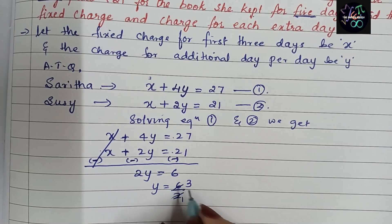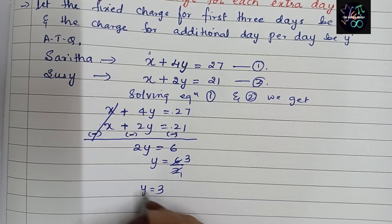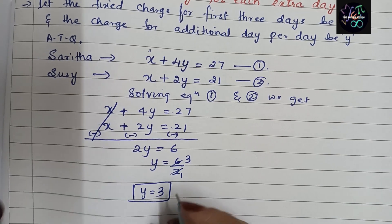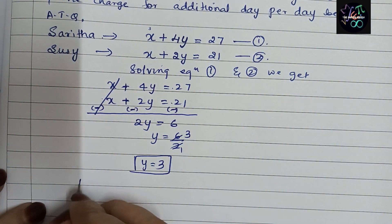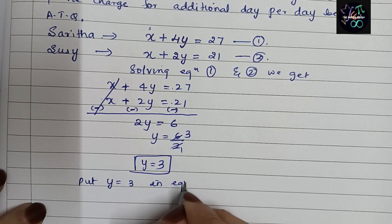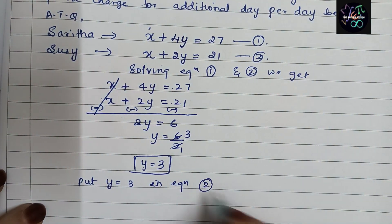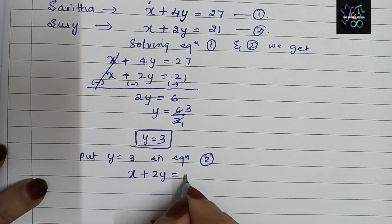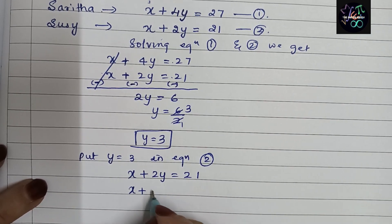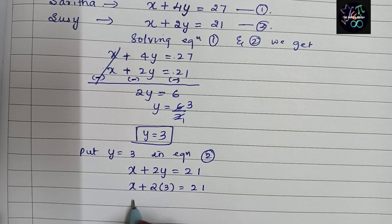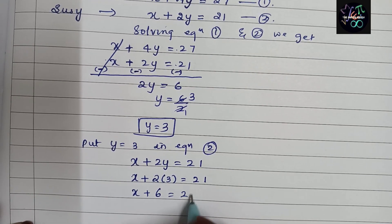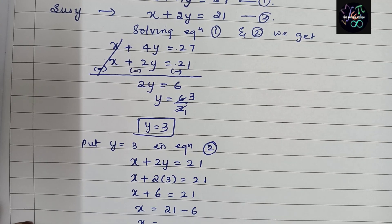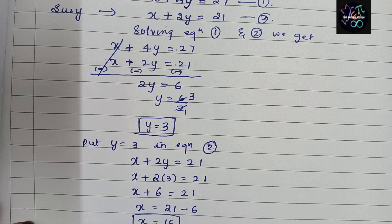So y = 3. Now substitute y = 3 into Equation 2: x + 2y = 21. That gives x + 2(3) = 21, so x + 6 = 21, therefore x = 21 minus 6, which gives x = 15.